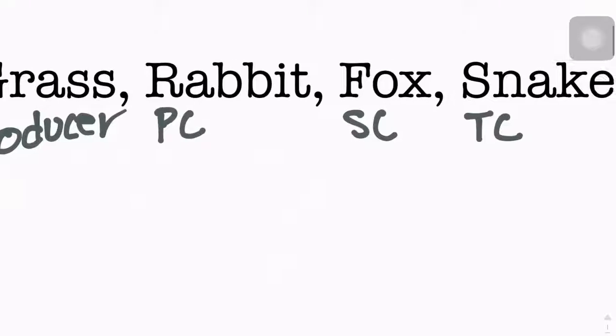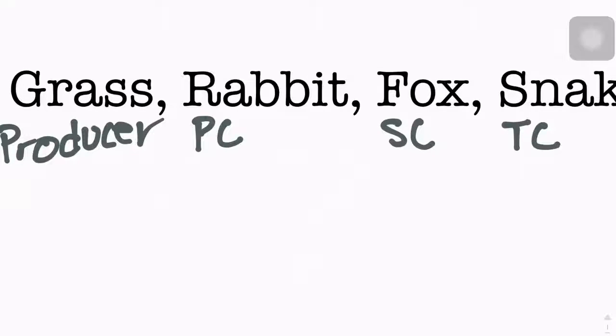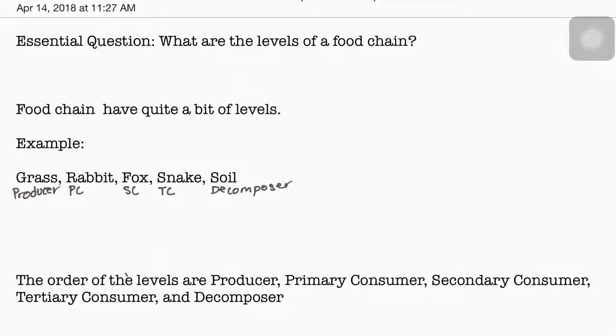It's the producer that makes its own food. Nothing else in the food chain makes their own food except for the producers, and that's why they're named producers. Also, if you guys want a part two and three about food chains and food webs, let me know.